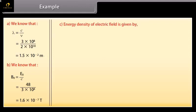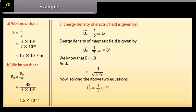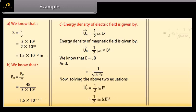Energy density of electric field is given by half epsilon not E square. Energy density of magnetic field is given by half mu not B square. We know that E is equal to CB and C is equal to 1 upon under root mu not epsilon not. On solving the two equations, we get average energy density of electric field equals the average energy density of magnetic field.